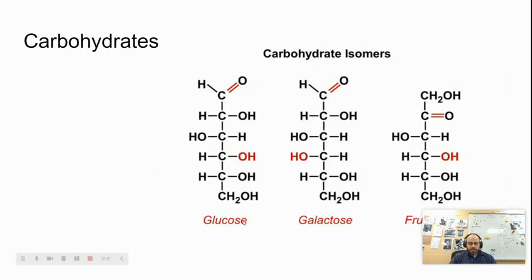Carbohydrates are made up of monomers called monosaccharides, and those monomers can have different shapes. Glucose, galactose, and fructose all have the same chemical formula, but because of their shape — different orientations of molecules, like an OH being on the left instead of the right — it changes the way that molecule works and behaves with other molecules.